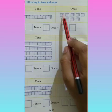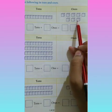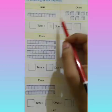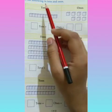We will start with ones, 1, 2, 3, 4, 5, 6, 7, 8. These are 8 ones. With ones, we are going to write 8, then tens.